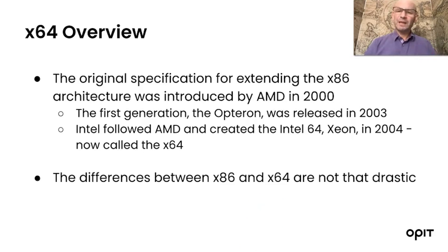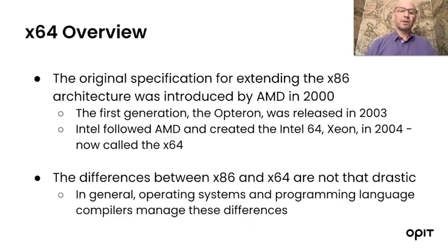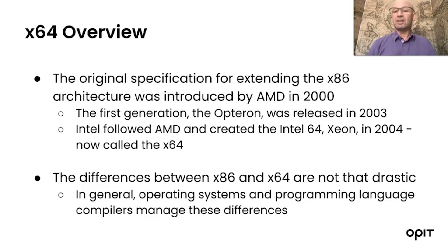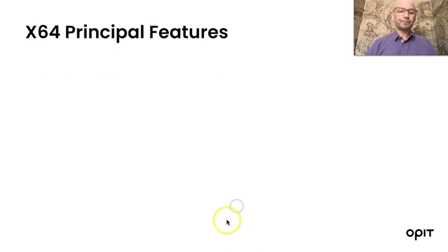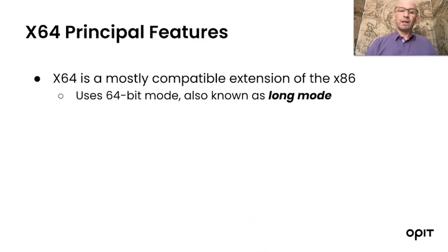The differences between the x86 architecture and this x64 architecture are not that drastic — there are not many big changes. In general, operating systems and the programming language compilers used to create applications manage these differences. The x64 is a mostly compatible extension of the x86, and it uses 64-bit mode, also known as long mode.